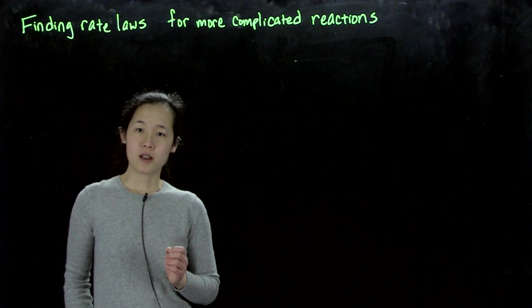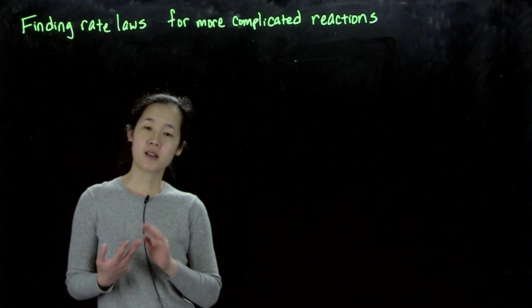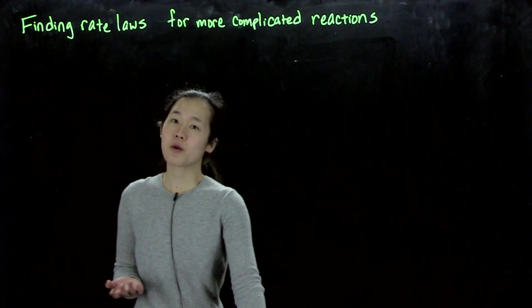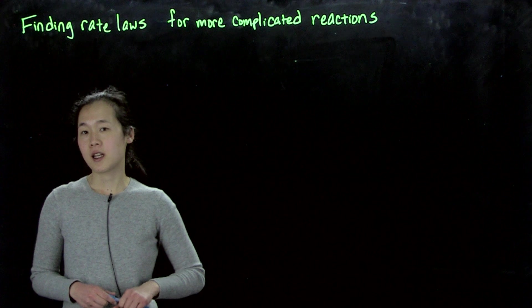Last time we talked about the integrated rate laws for reactions involving only one reactant for first, second, and zero-order reactions. But in many cases, we have multiple reagents that might react together, so then the rate law derivation is a little bit less straightforward.